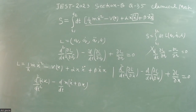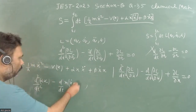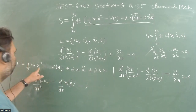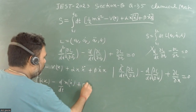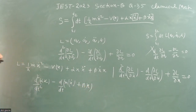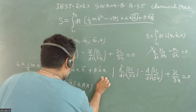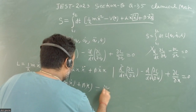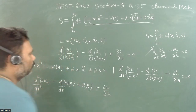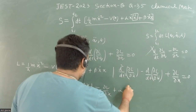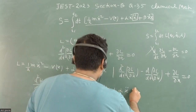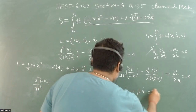Continuing, we separate the terms: differentiating m x-dot gives m x-double-dot, and differentiating beta x gives beta x-dot. For ∂L/∂x, we get minus dV/dx from the potential term, plus alpha x-double-dot from the coupling term, plus beta x-dot. So these all set equal to zero.